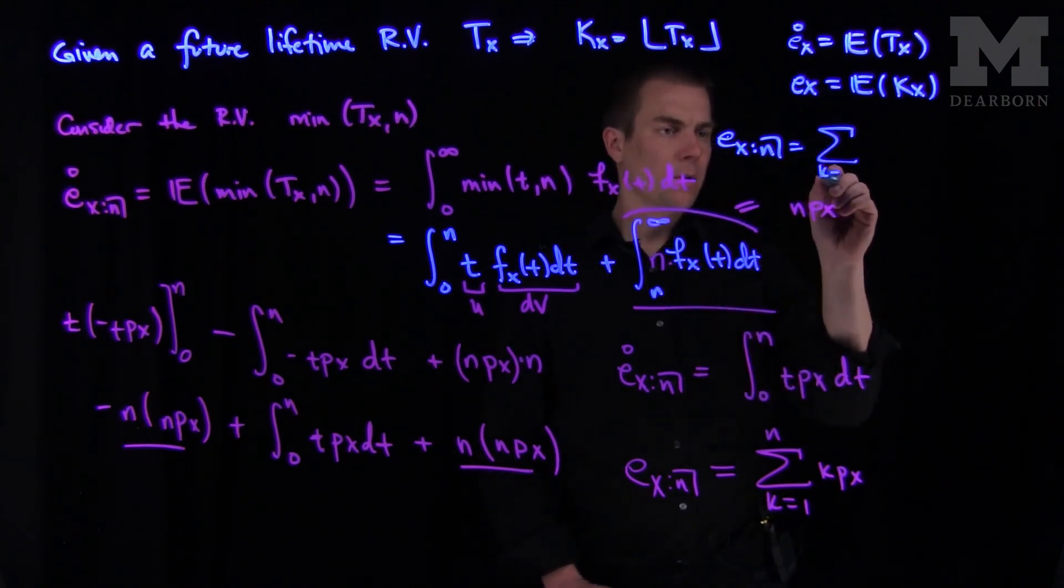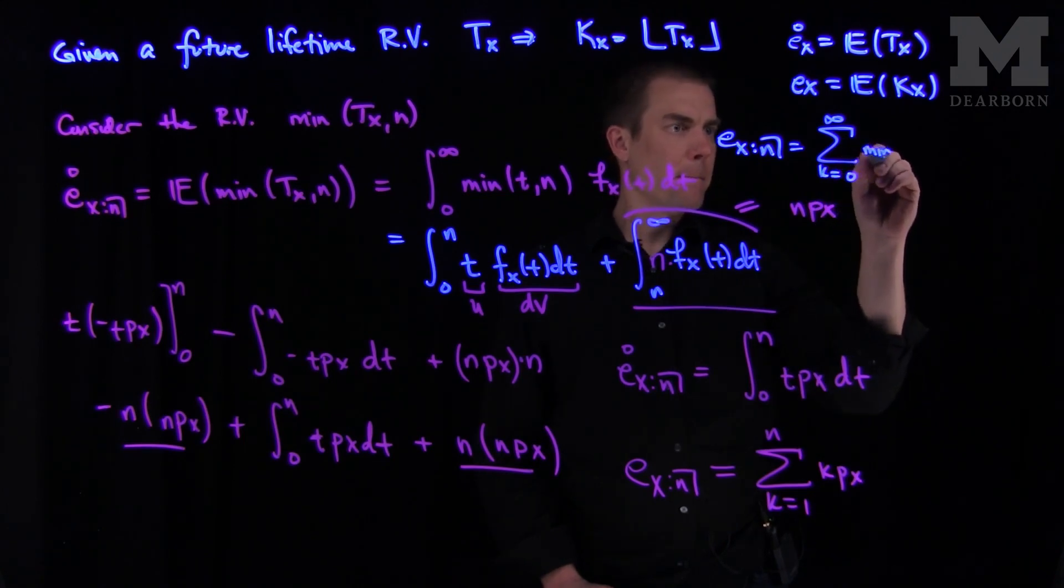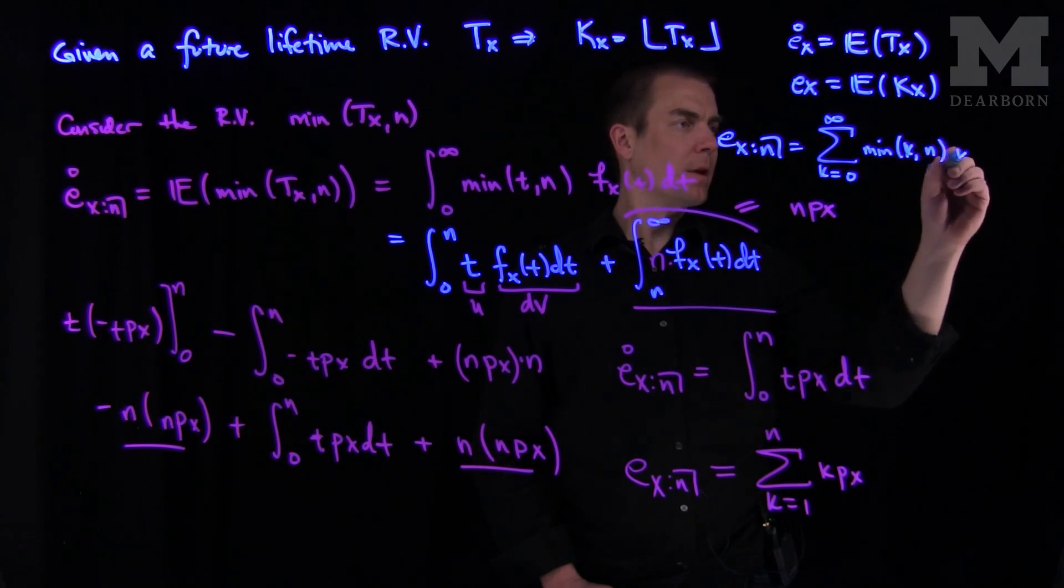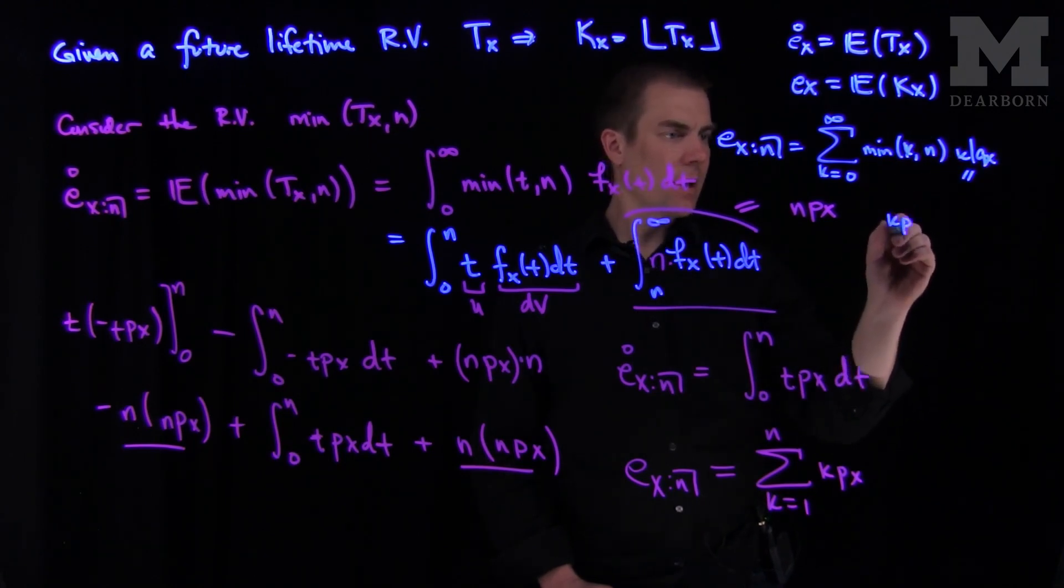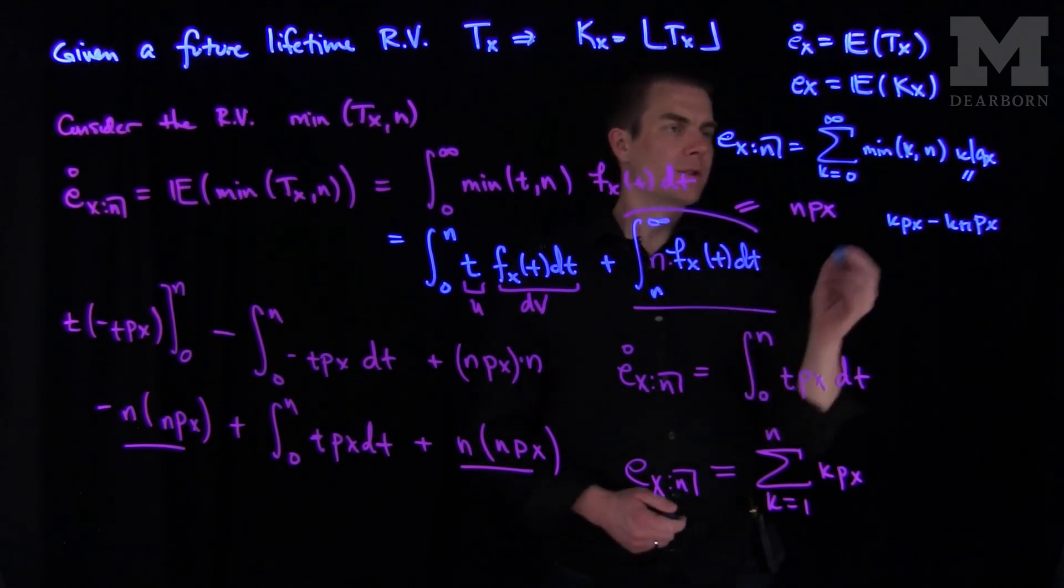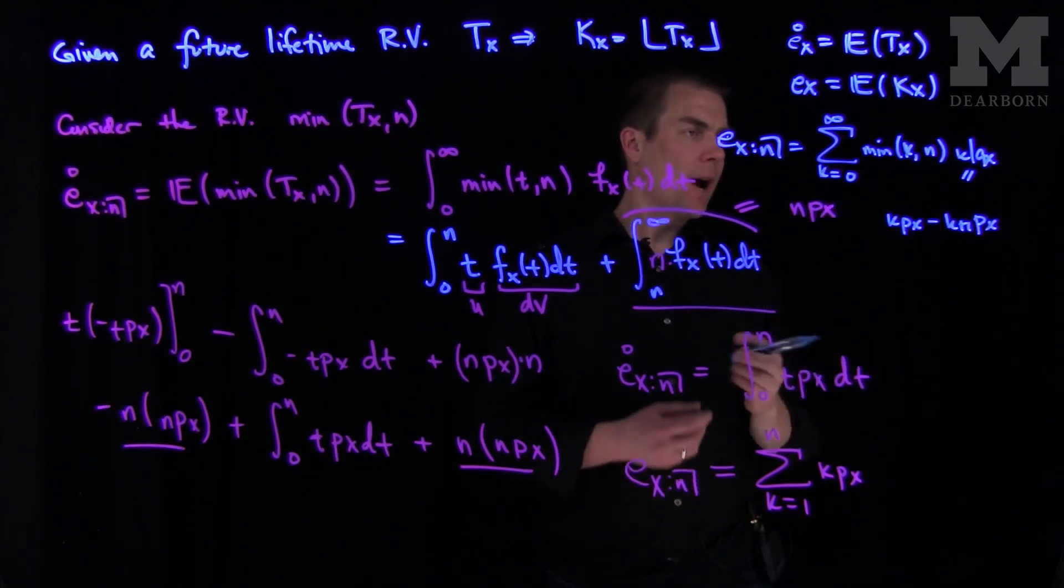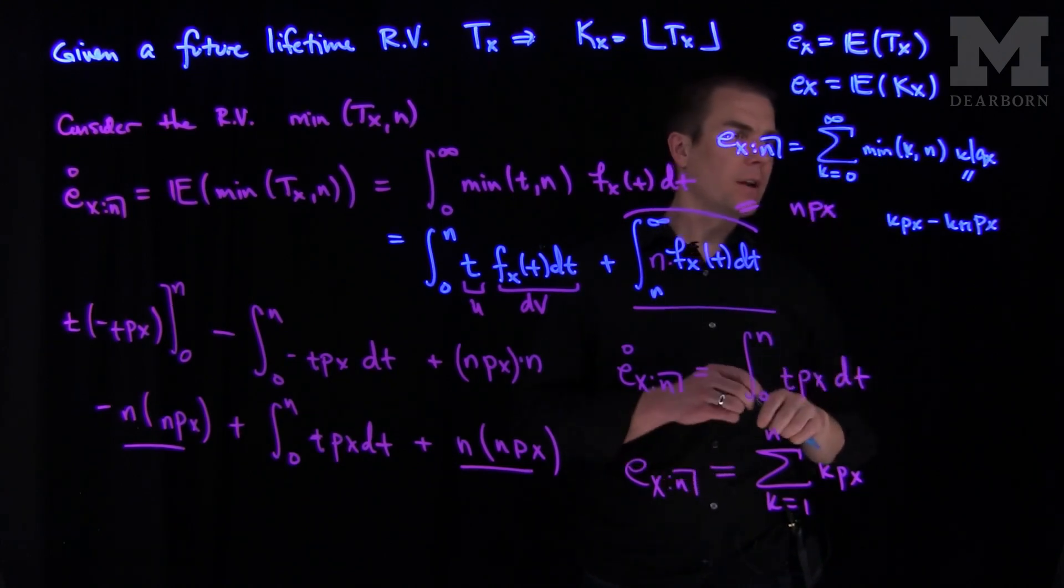And we know that k qx is exactly k px minus k plus one px. And so the sum will start at one. And when you get up to n, you'll have a n qx over here. So the last term over there, you'll have an n to infinity of those things.